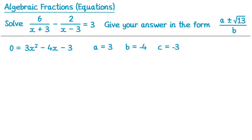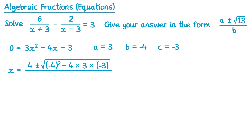Now we can substitute those values into the quadratic formula. It's x equals negative b — well b is already negative so negative b would become positive 4 — plus or minus the square root of b squared, so negative 4 squared, subtract 4 lots of a which is 3, multiplied by c which is negative 3. And all of this is divided by 2 lots of a: 2 lots of 3, so 6.